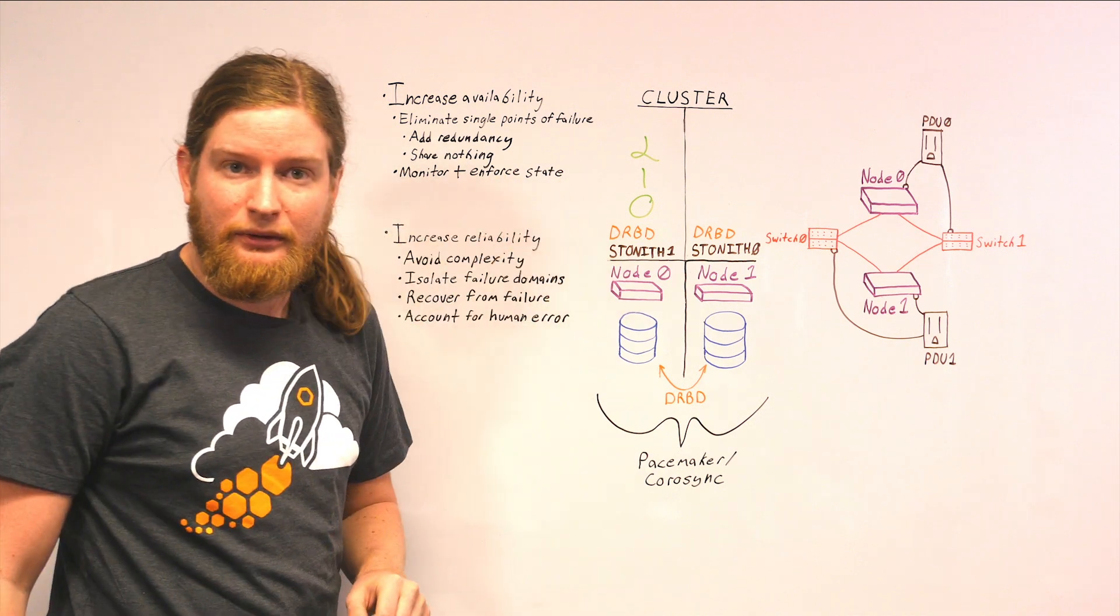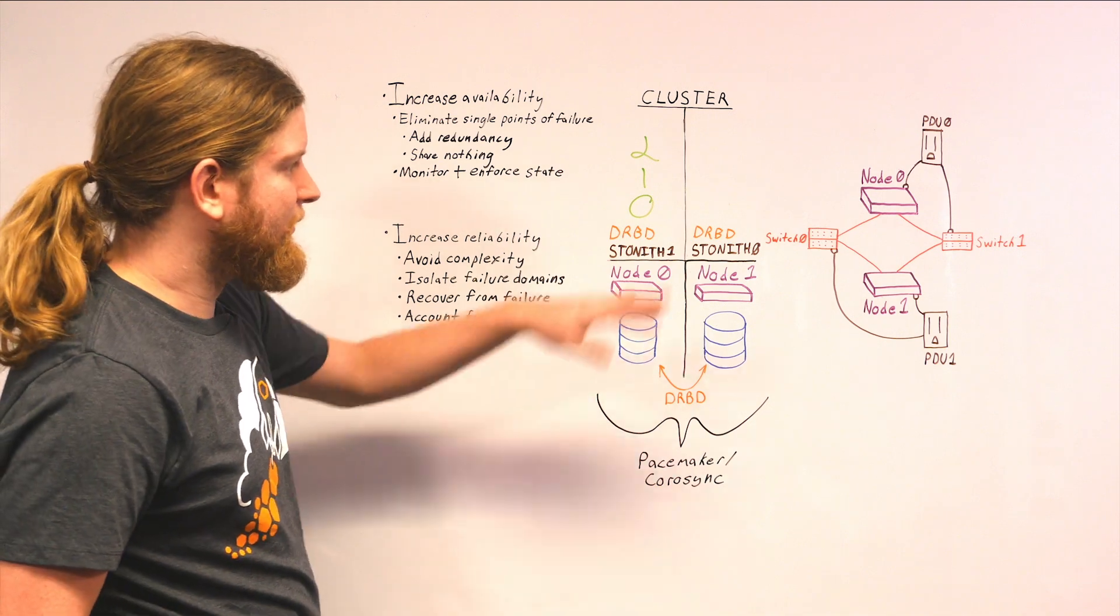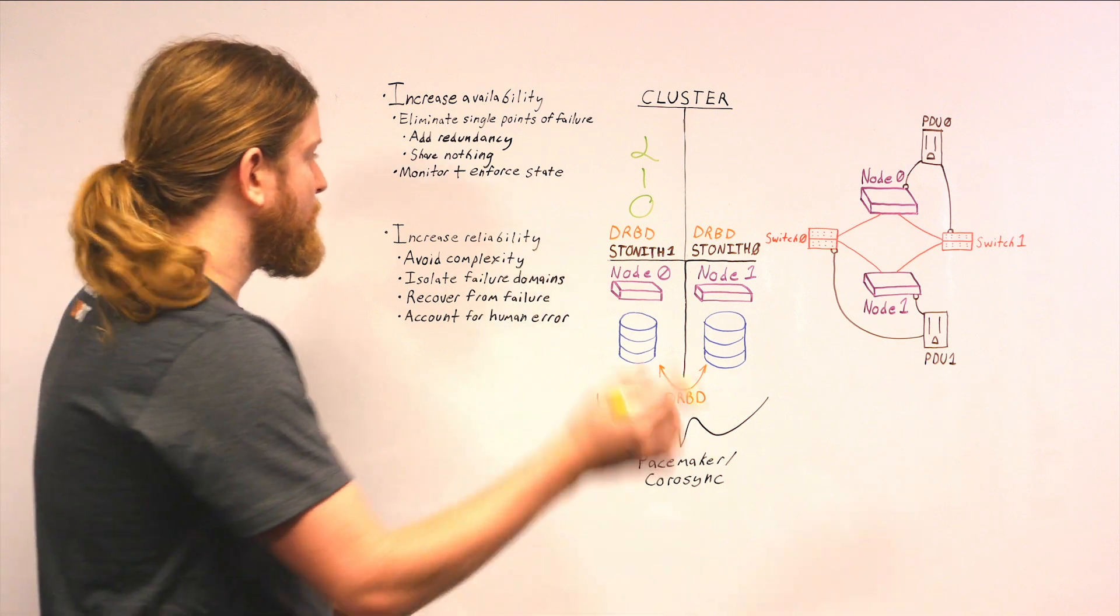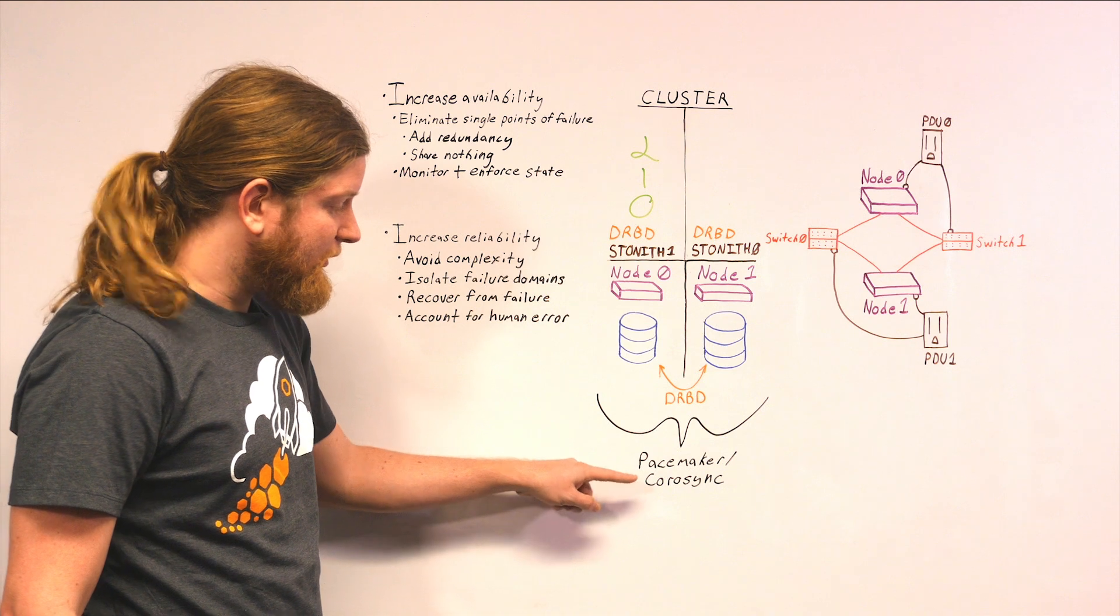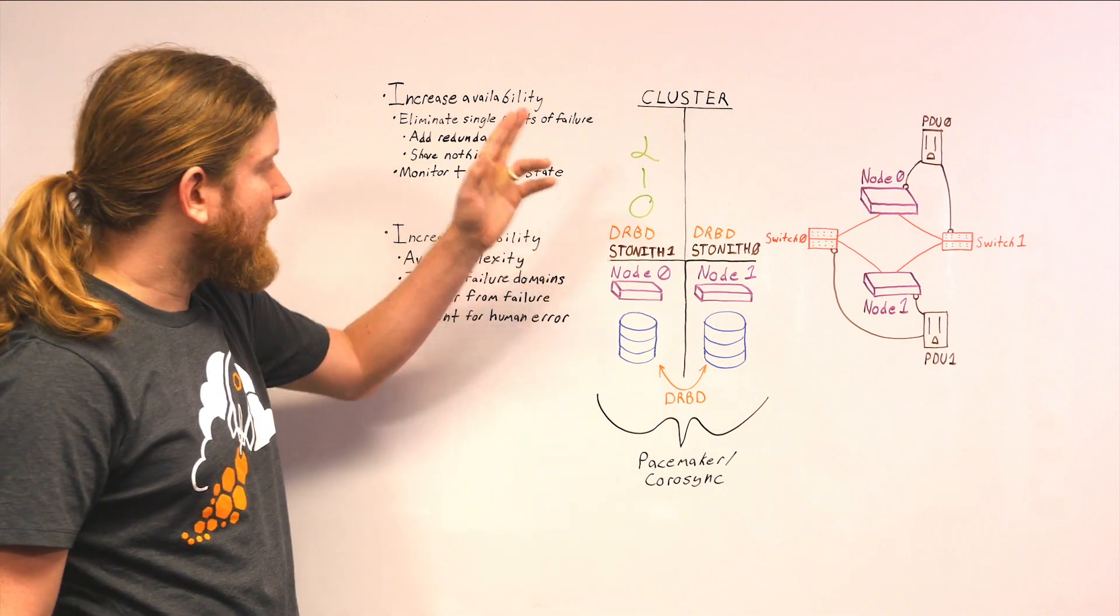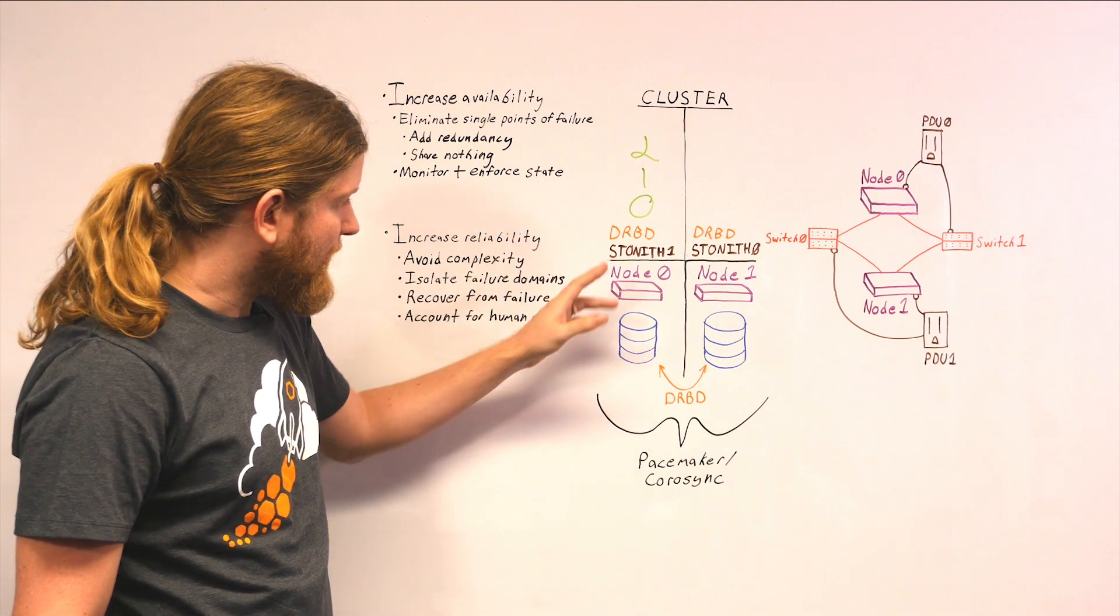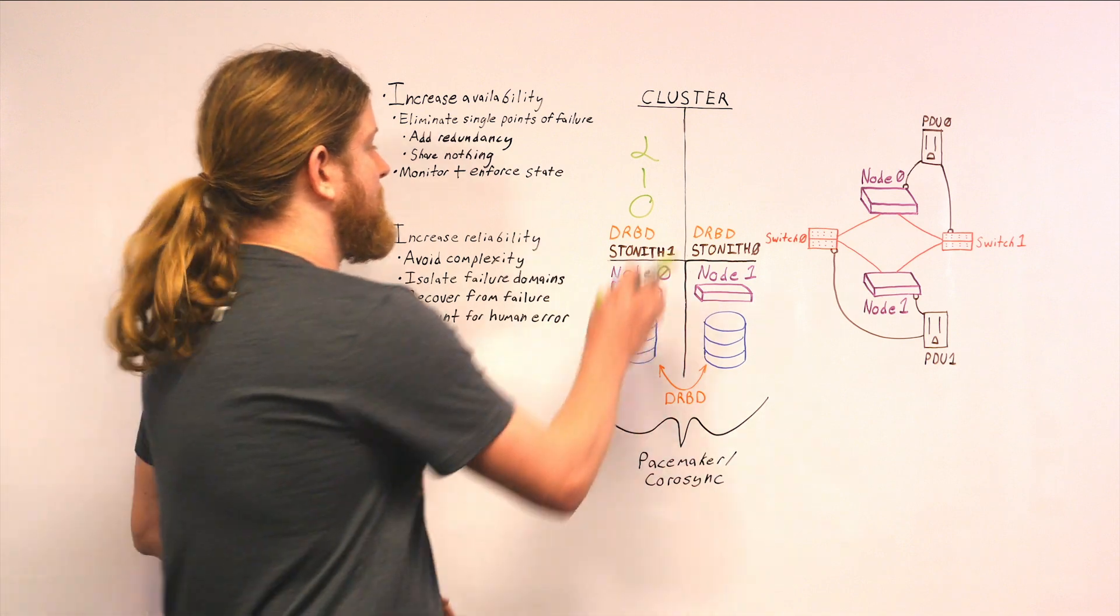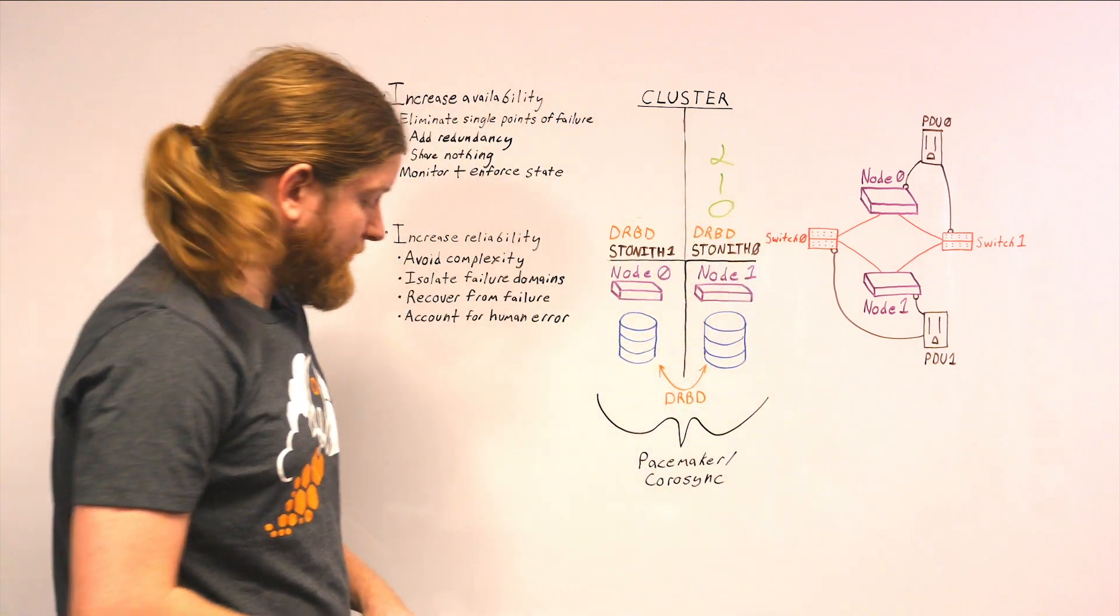We want to monitor and enforce state as well. All of this infrastructure is fine, but it doesn't get us our applications automatically moving from one node to another. We still need the technology that automatically moves your applications around, and that's Pacemaker. Pacemaker is a high availability clustering software that uses Corosync to communicate. Corosync is a messaging layer. Between Pacemaker and Corosync, you have a solution that is able to monitor and enforce state. If these applications on node zero are down, we immediately know about it. Pacemaker can communicate with Corosync and tell those resources to move over to node one.